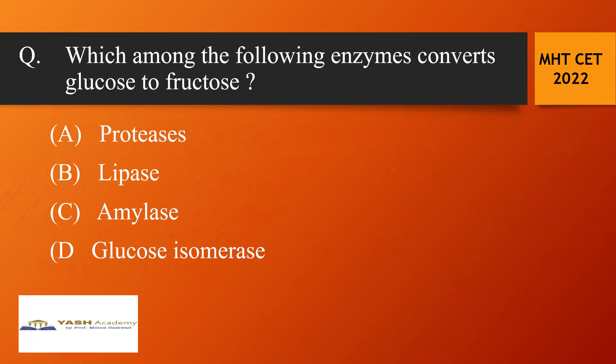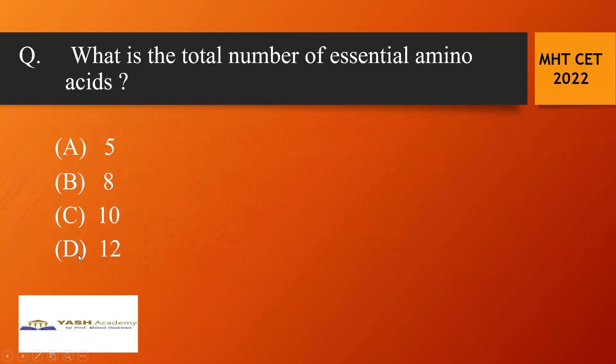And D, glucose isomerase is enzyme which converts glucose to fructose. So D is the correct answer option.